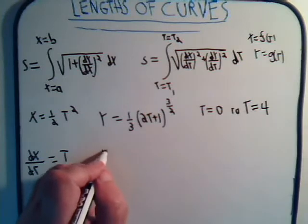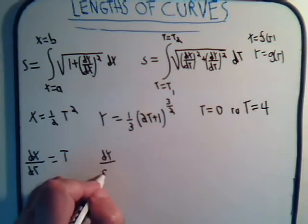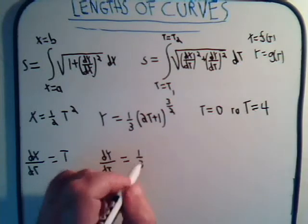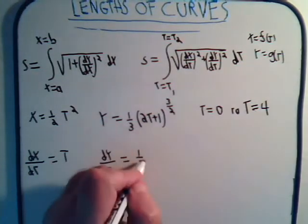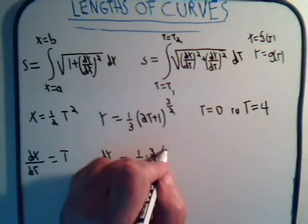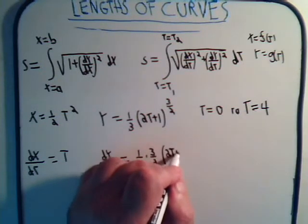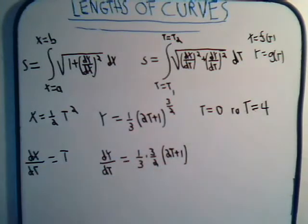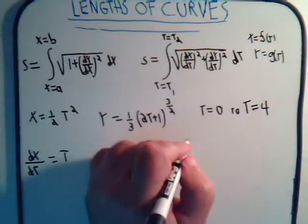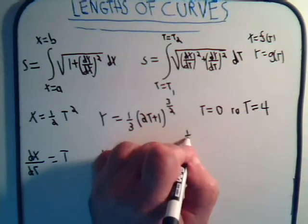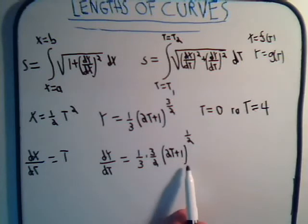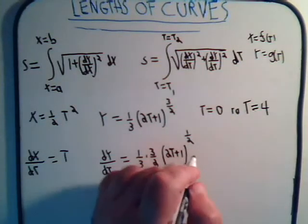And dy/dt equals ⅓. Now you bring the 3/2 down, that's times (2t + 1), and the new exponent is 3/2 minus 1, which is ½, times the derivative of what's inside, and that's just 2.